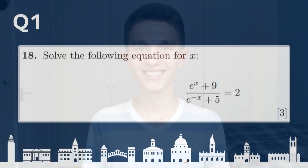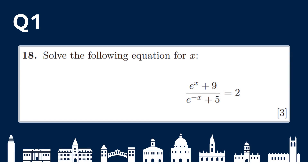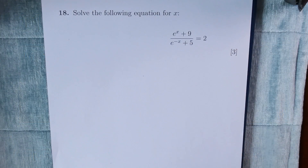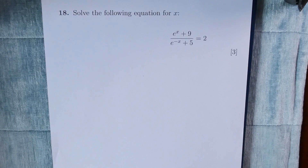I'm going to put the question on screen briefly for you to pause the video and give it a try, if you want, before I start my explanation. Without further ado, let's get started. Solve the following equation for x: e to the x plus 9, divided by e to the minus x plus 5, is equal to 2.